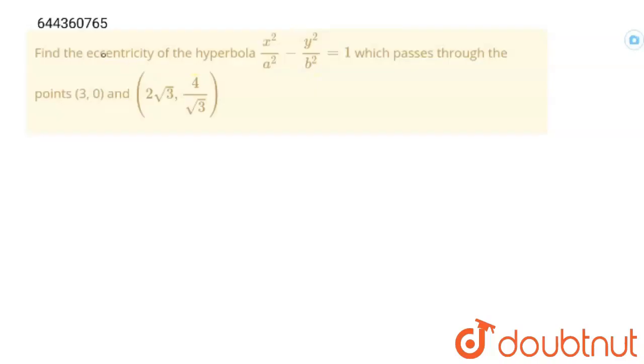Hello student, the question is find the eccentricity of the hyperbola x²/a² - y²/b² = 1 which passes through the points (3,0) and (2√3, 4/√3). So let's solve this problem.